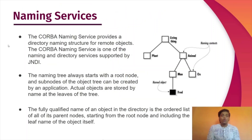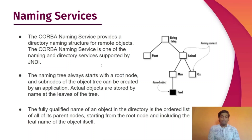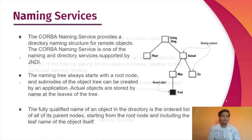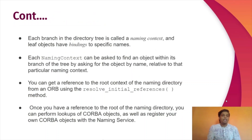The first is naming services. The CORBA naming service provides a directory naming structure for remote objects and is one of the naming and directory services supported by JNDI. The naming tree always starts with a root node, and sub-nodes of the object tree can be created by an application. Actual objects are stored by name at the leaves of the tree. The fully qualified name of an object is the ordered list of all its parent nodes starting from the root, including the leaf name of the object itself. For example, the full name of an object labeled 'Fred' in the diagram would be 'living thing, animal, name, Fred' in that order.